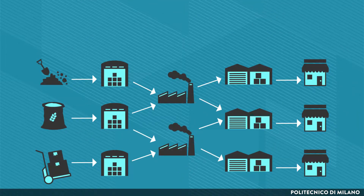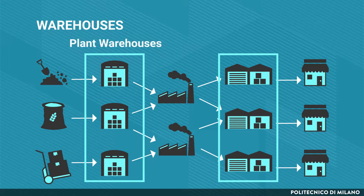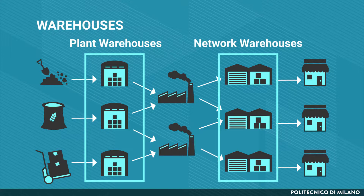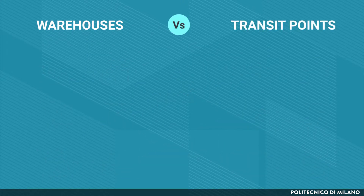Focusing on the nodes and in particular on the warehouses, they may be classified either according to their location within the supply chain or according to their function. Based on their location, it is possible to distinguish between plant warehouses, in which raw materials, semi-finished products and inter-operational stocks are stored, and networked warehouses, which are warehouses containing finished products, transit points and distribution centers. Based on their function, it is possible to make a distinction between warehouses and transit points.